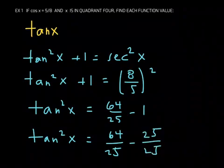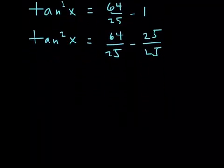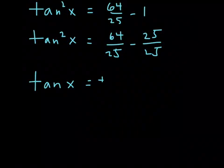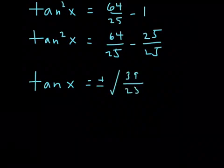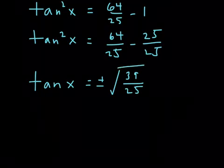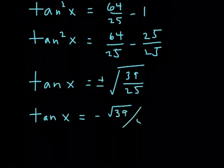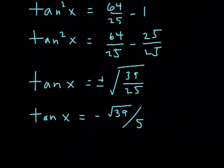Taking the square root of both sides, tangent of x equals plus or minus the square root of 39/25. Remember that x is in quadrant 4, and in quadrant 4 tangent is negative. So tangent of x equals negative square root of 39 over 5. Good job — that's the final answer.